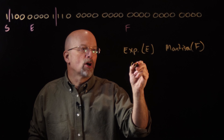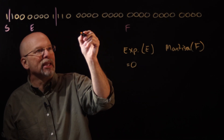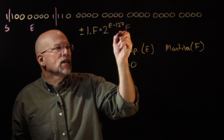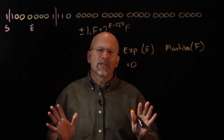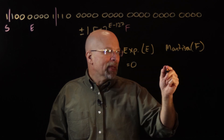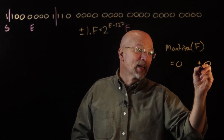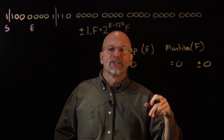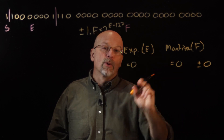The special cases are these. First, whenever the exponent is equal to all zeros, looking at the bias notation — plus or minus 1.F times 2 to the E minus 127 — when E is equal to 0, the exponent we're raising 2 to is negative 127, the smallest possible value. If the mantissa is also equal to 0, this special case means we're representing 0. We're actually representing plus or minus 0 because the sign bit could be 1 or 0, but in the processor, plus 0 equals minus 0. So whenever the exponent and mantissa are all zeros, we're representing 0.